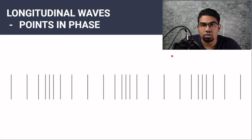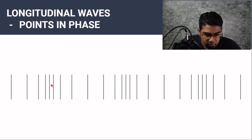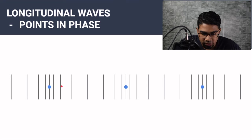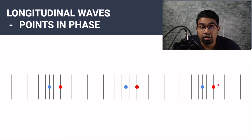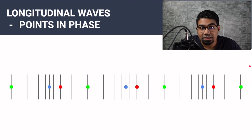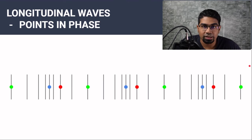Longitudinal waves also have points that are in phase. When we look at the pattern of the wave, all center points of compressions are in phase. Moving two lines to the right gives another in-phase point. We can also take the center of the rarefaction — these are all points that are in phase. When we measure the distance between points that are in phase, once again we get the wavelength.